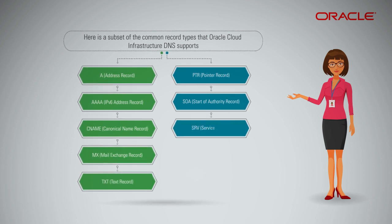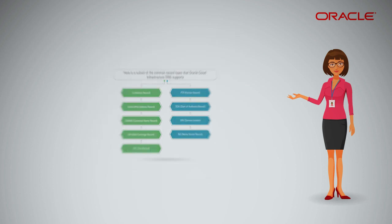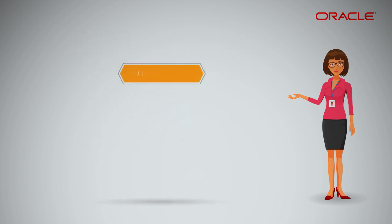Additional record types include SRV or Service Locator, and NS or Name Server Record. In addition, the Oracle Cloud Infrastructure DNS supports an alias record type, which is specific to Oracle Cloud Infrastructure DNS.